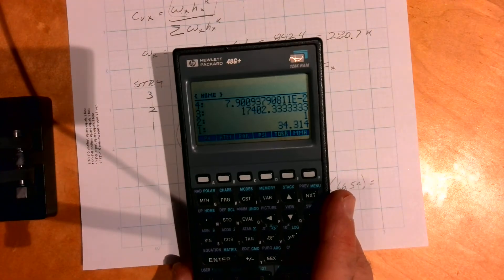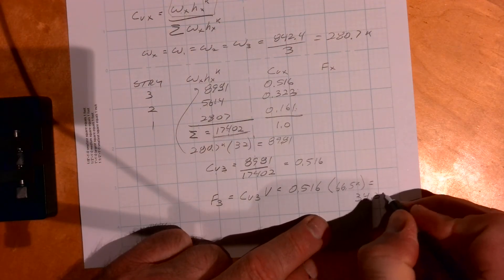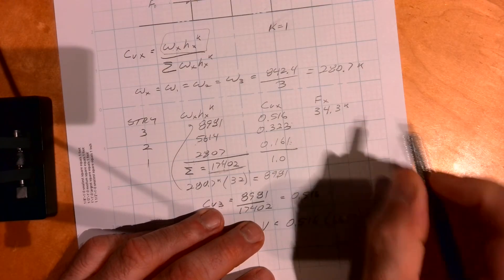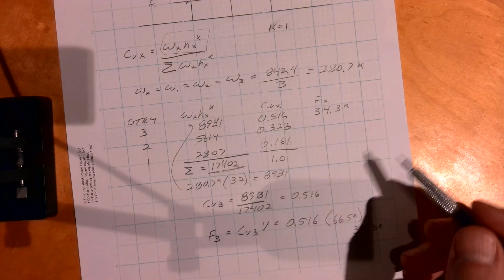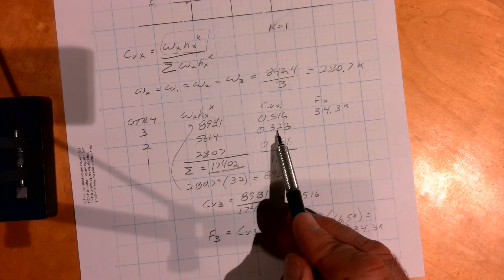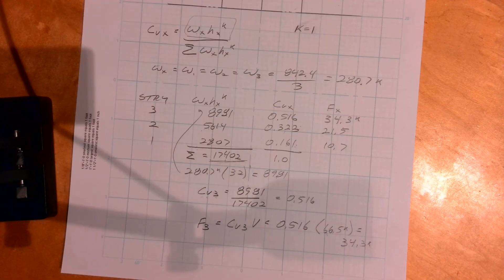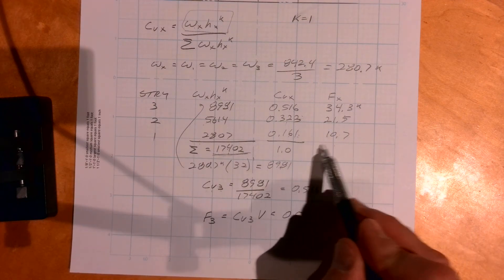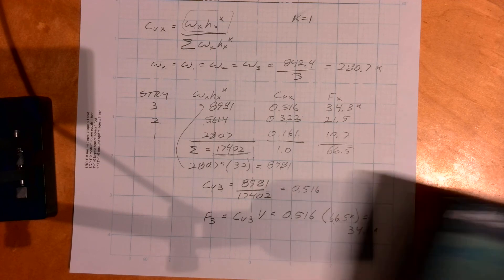So cranking that out really quick, I get 34.3 kips is my story shear at the roof. And then I'll calculate the other two. Or frankly you can, so you just do 0.323 times 66.5.